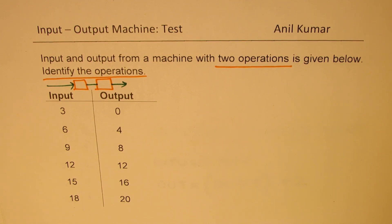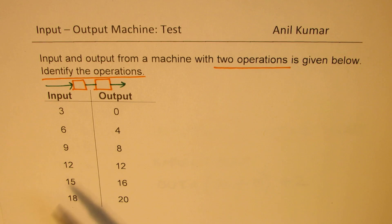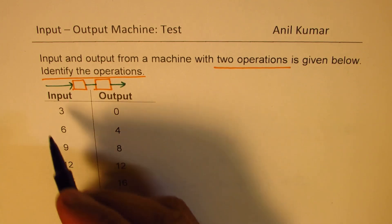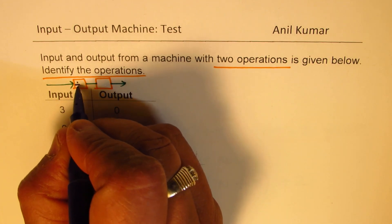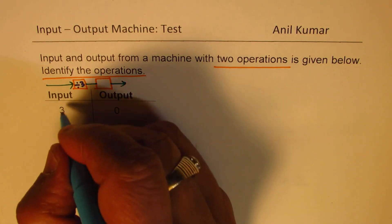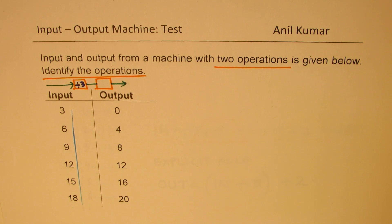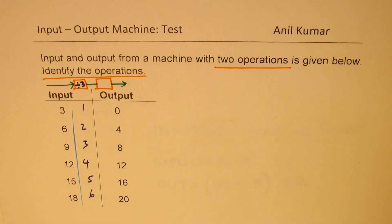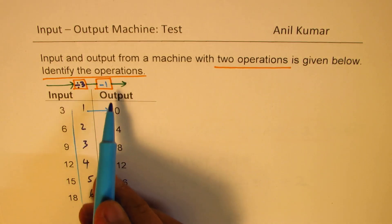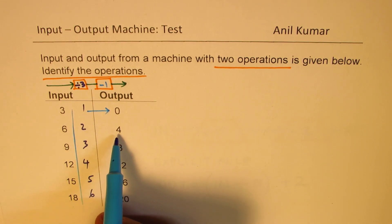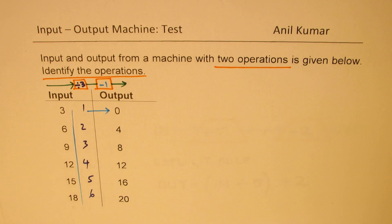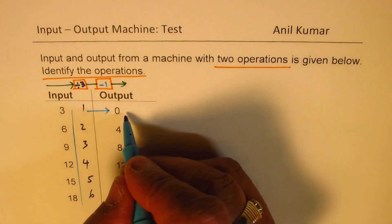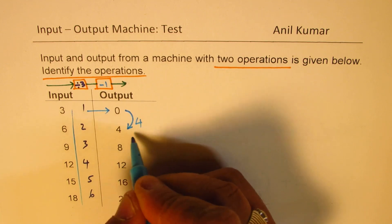In this case the inputs are 3, 6, 9, 12, 15 — multiples of 3. Let's first divide by 3: we get 1, 2, 3, 4, 5, 6. Now, how do I get from 1 to 0? I'd have to subtract 1 — but does it work for the others? No, so I have to do something else.